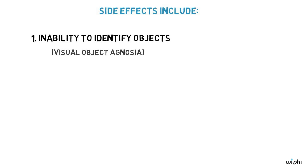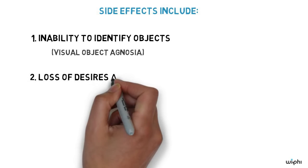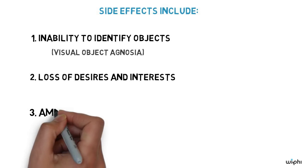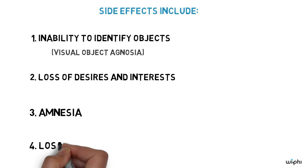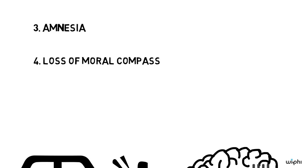Another malfunction the microchip is capable of producing is it removes all of your desires and interests, music you like, your hobbies, your goals for the future. The microchip can also lead to amnesia for all your experiences prior to the crash. Finally, the microchip could lead you to lose your moral compass, your ability to know the difference between right and wrong.